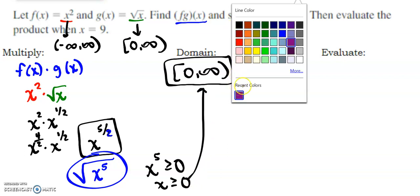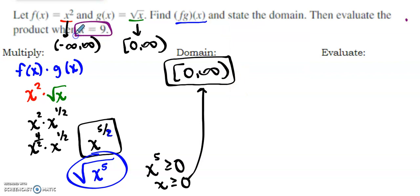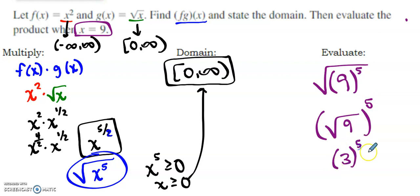Last thing then, just like the other ones, is to evaluate. So when x is 9, I'm going to take the square root of 9 to the 5th power. But remember, we could view that as the square root of 9, which we know, to the 5th power. The square root of 9 is 3. 3 to the 5th is going to end up being 243.